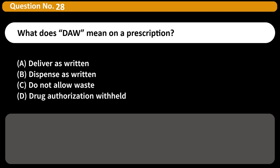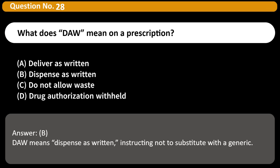What does DAW mean on a prescription? A. Deliver as written. B. Dispense as written. C. Do not allow waste. D. Drug authorization withheld. Answer: B. DAW means dispense as written, instructing not to substitute with a generic.